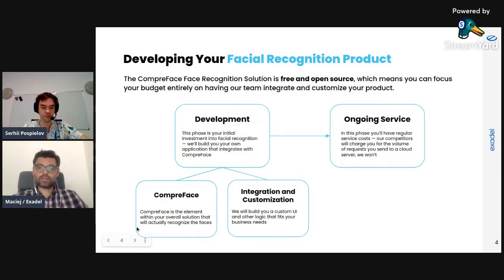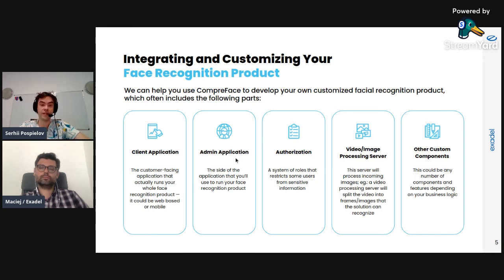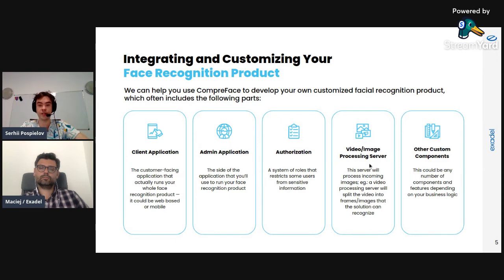What are the most common elements of facial recognition products? Your business logic can contain different elements. For an attendance system it's common to have an admin application. For phone-based face authentication you'll need a client application. Authorization with a role-based system to control data is also very common. If you're doing recognition from video, you'll need a video processing server that splits the video into frames. Of course there can be many other components depending on the business case.